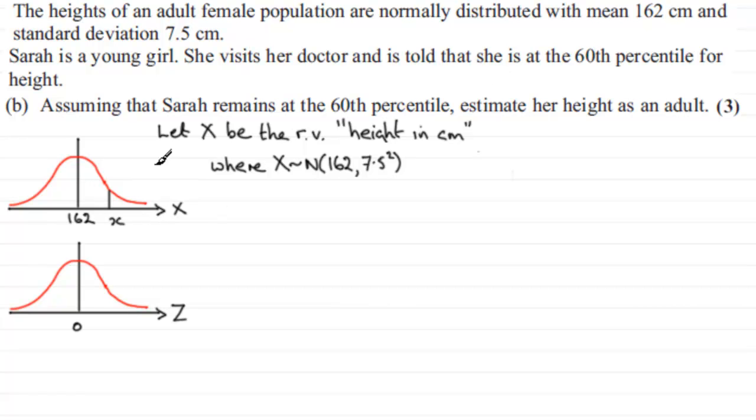So that means that this area to the left here is going to represent 60% or as a decimal 0.6. That also means that this area to the right, we'll mark that in green, the area to the right of our observed value X has got to be 0.4. Now what we do is we project this observed value straight down onto our standardized normal graph and we'll call this z.